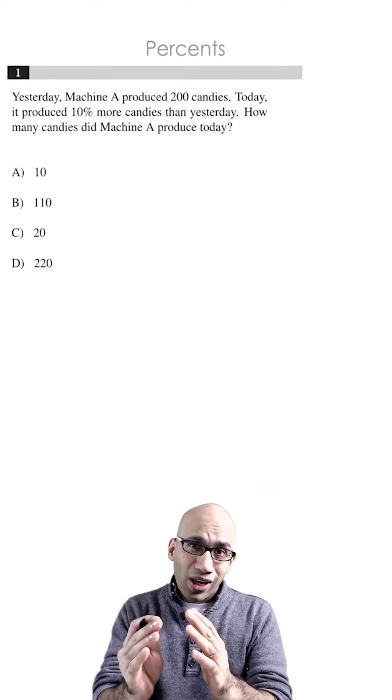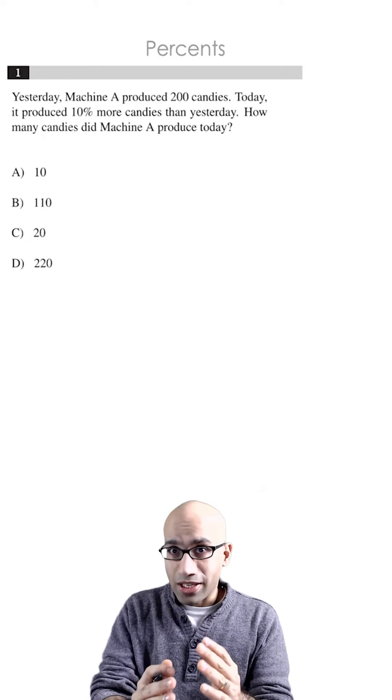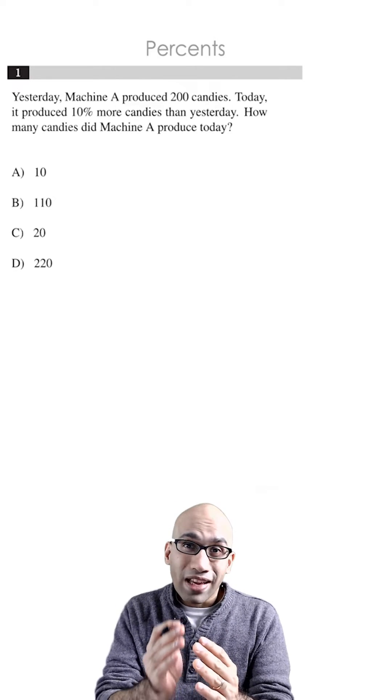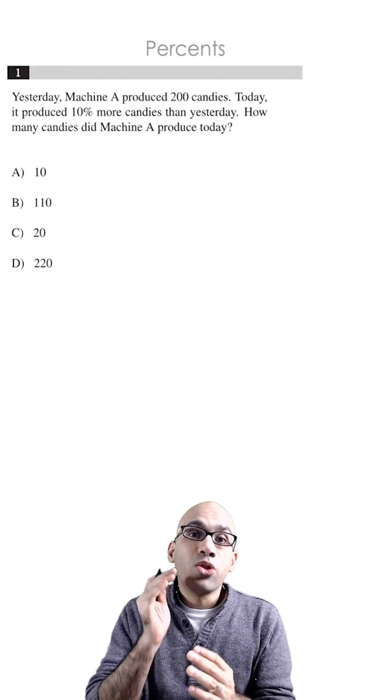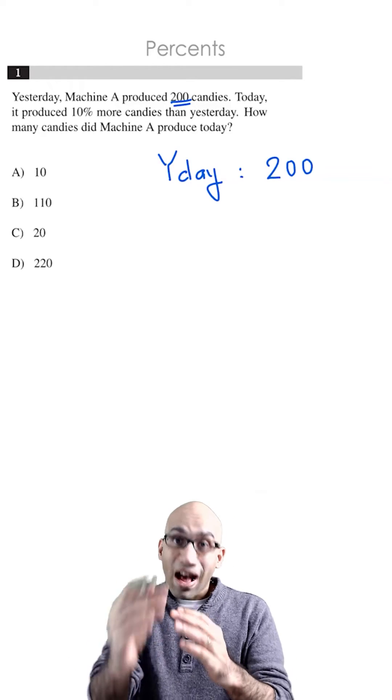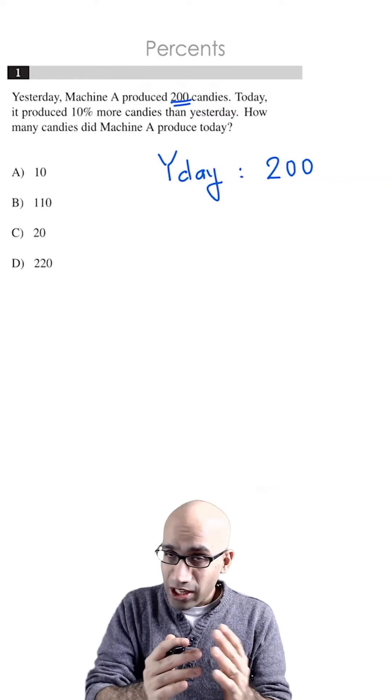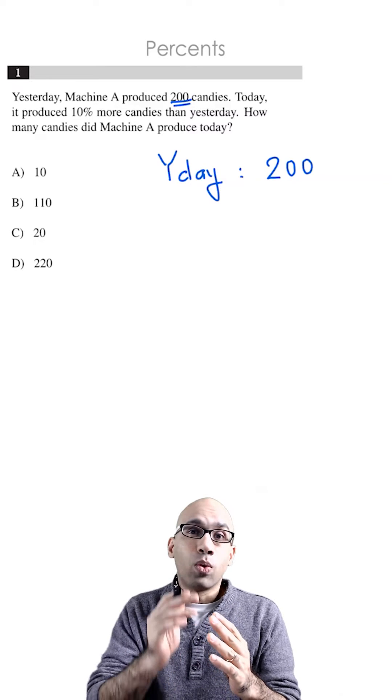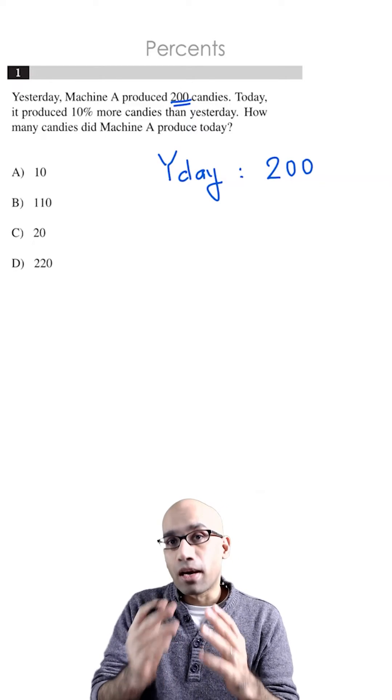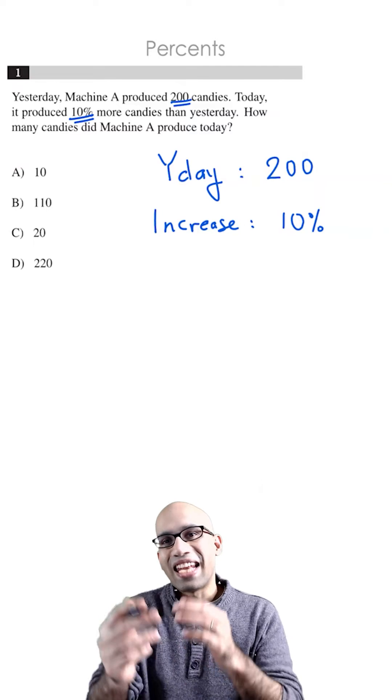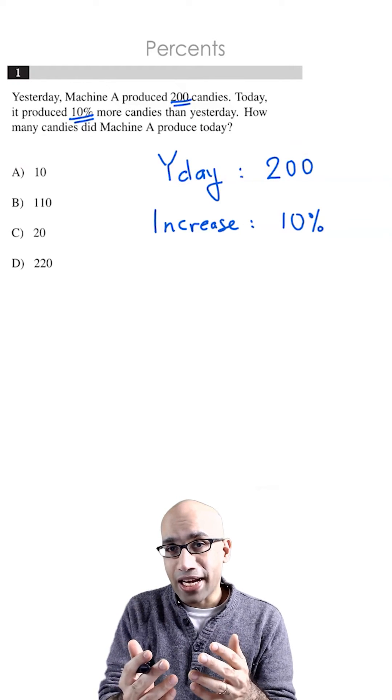This is a typical SAT problem regarding percentages. You're given that machine A produces 200 candies. After producing 200 candies yesterday, today there was a 10% increase in the number of candies produced. And now you're asked, how many total candies are produced today?